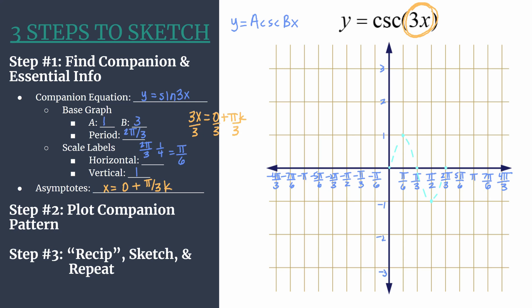Now that we have this we're ready for the main step. Step 3, we will recip, sketch, and repeat. Recip is just the verb form of take the reciprocal values and graph your cosecant graph.